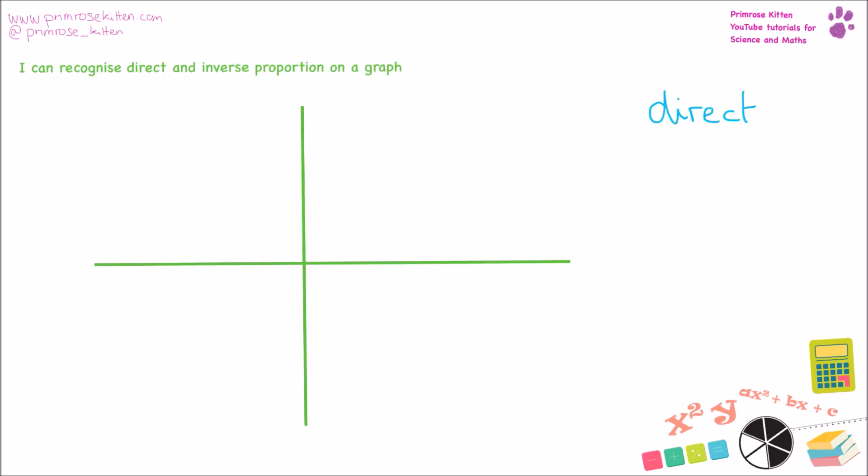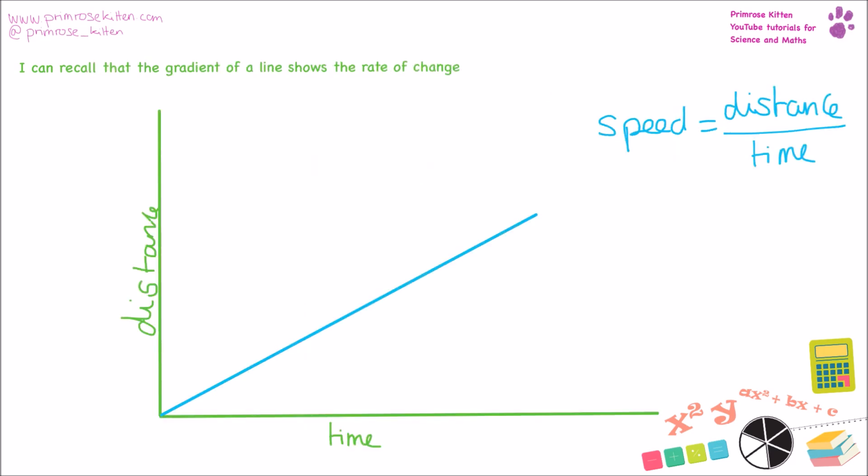When things are directly proportional, you are going to get a nice straight line graph. When things are inversely proportional, you are going to get a curved graph. When you have a graph, the gradient of the graph is going to show you how quickly things are changing, or the rate of change. The example I've used here is a distance time graph. And speed, the rate of change, is going to be distance divided by time. So our gradient is always going to be the changing up divided by the change in across.